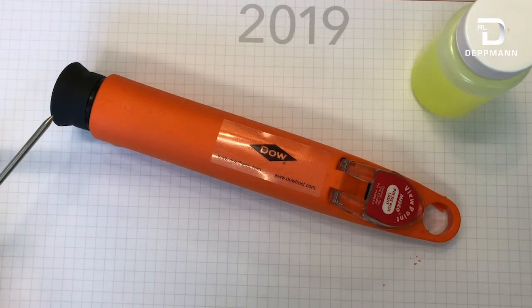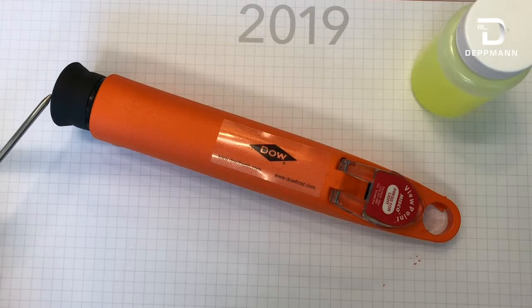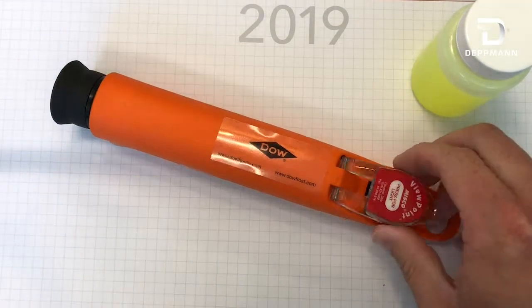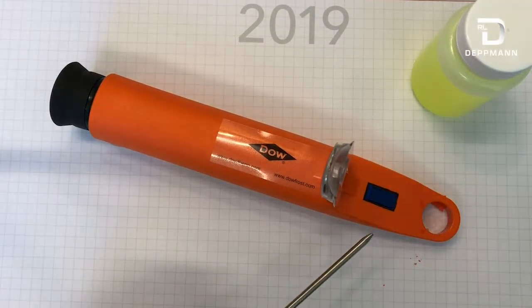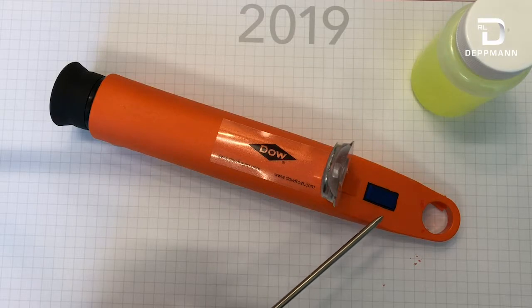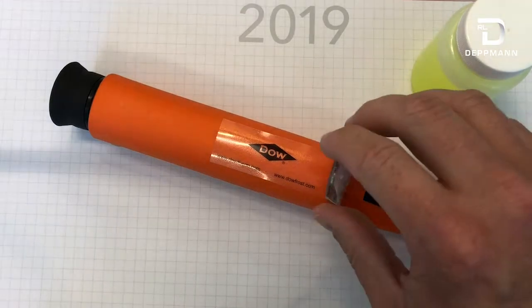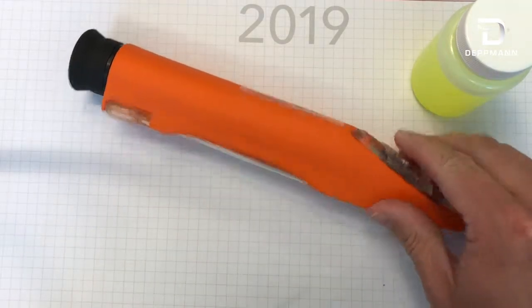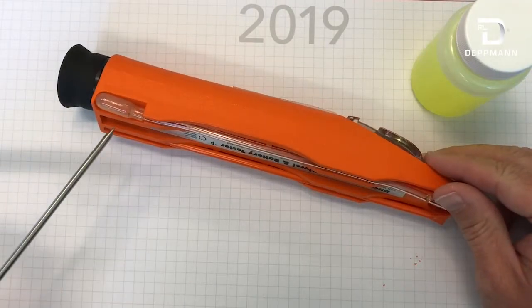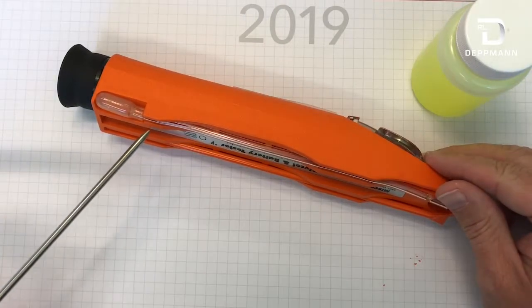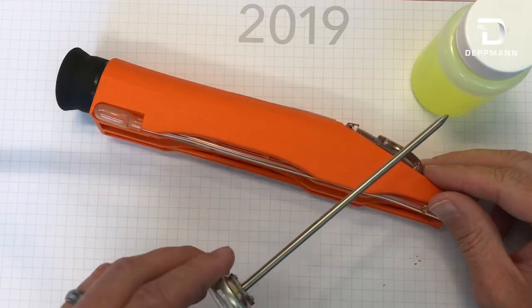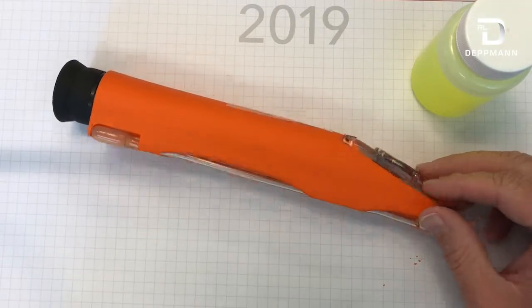You'll notice there is an eyepiece here which will be used for viewing the sample, the measuring surface which is where we'll place the sample from our system, and on this particular model we have an eyedropper which we can use to take the sample from our bottle here and put it on the measuring surface.